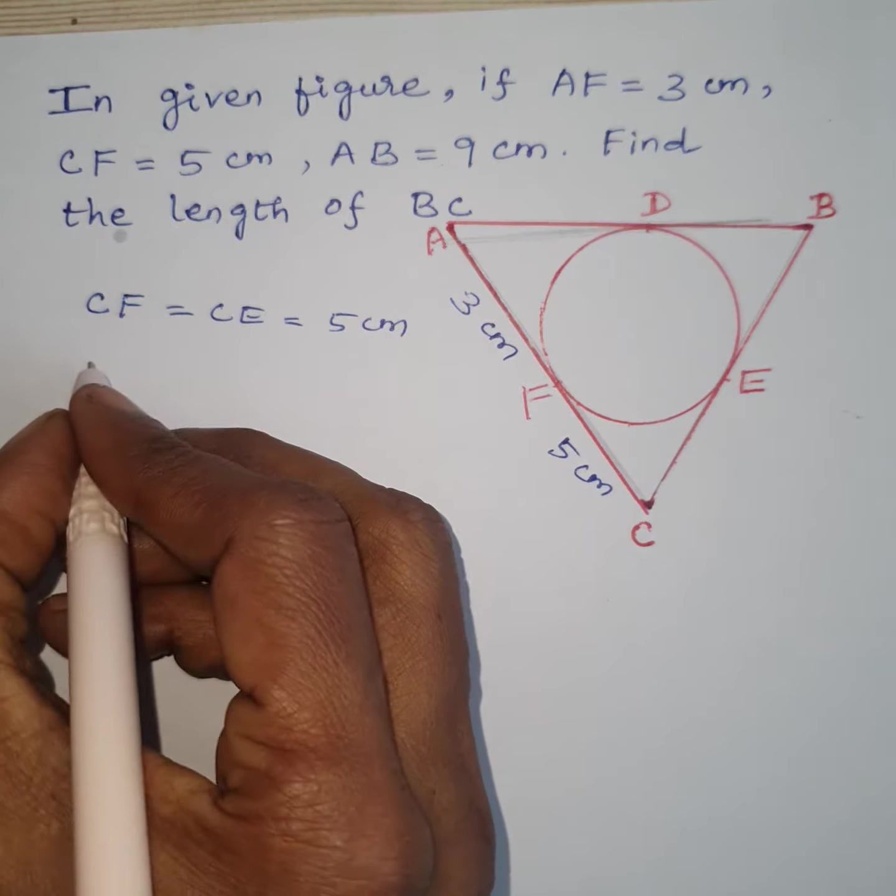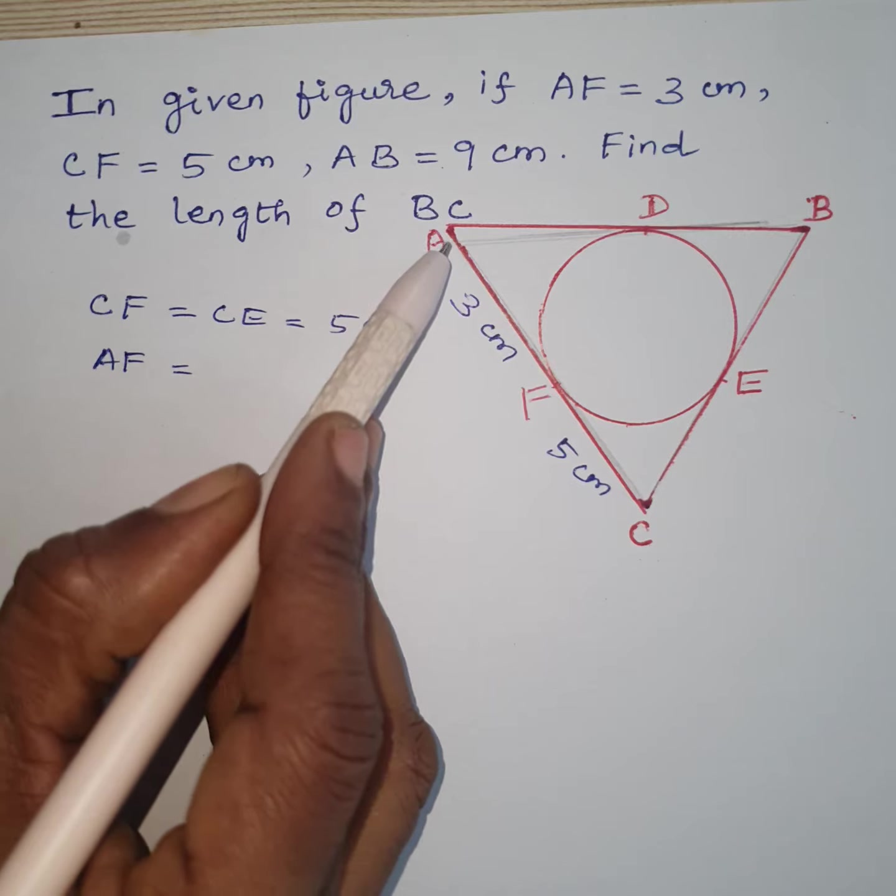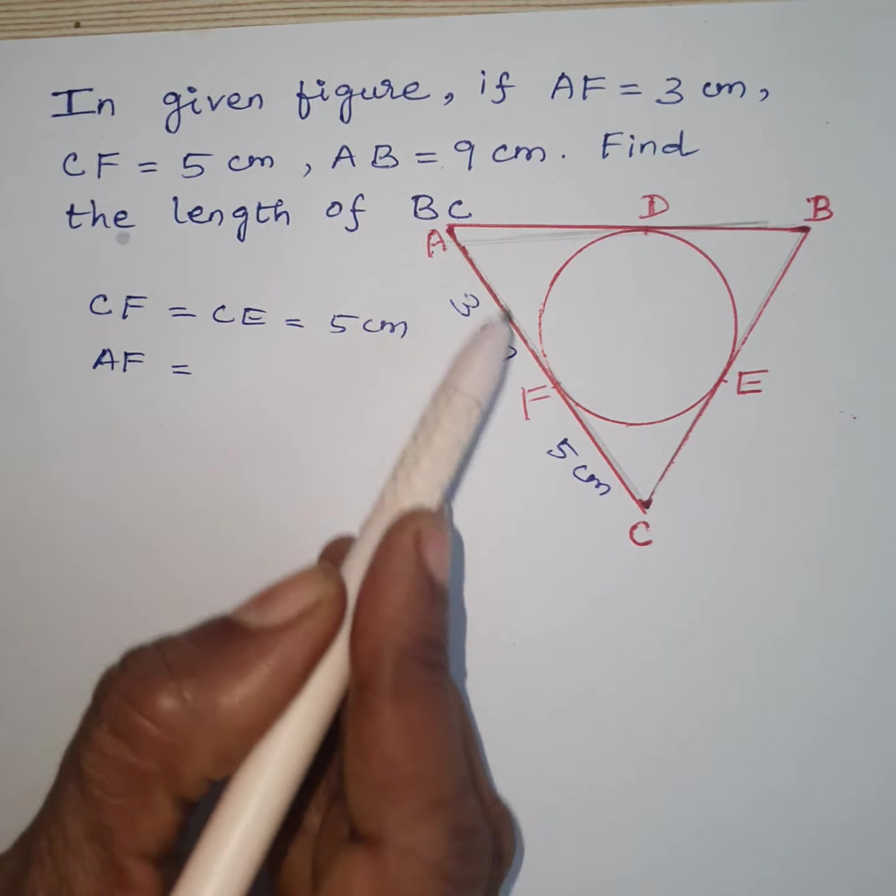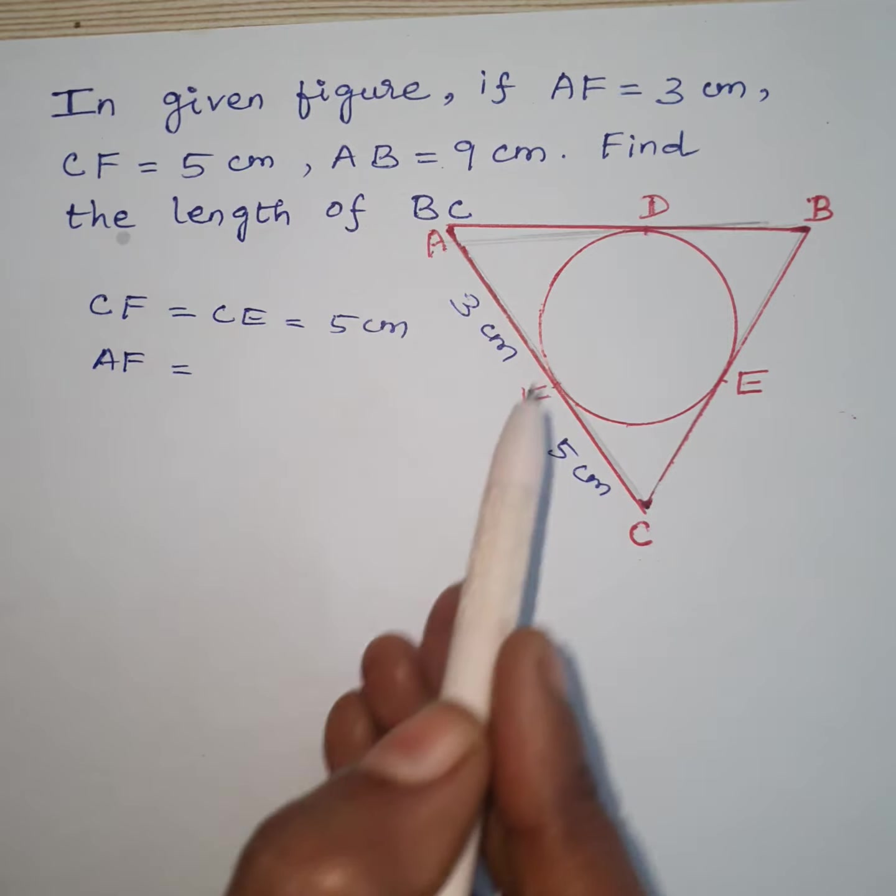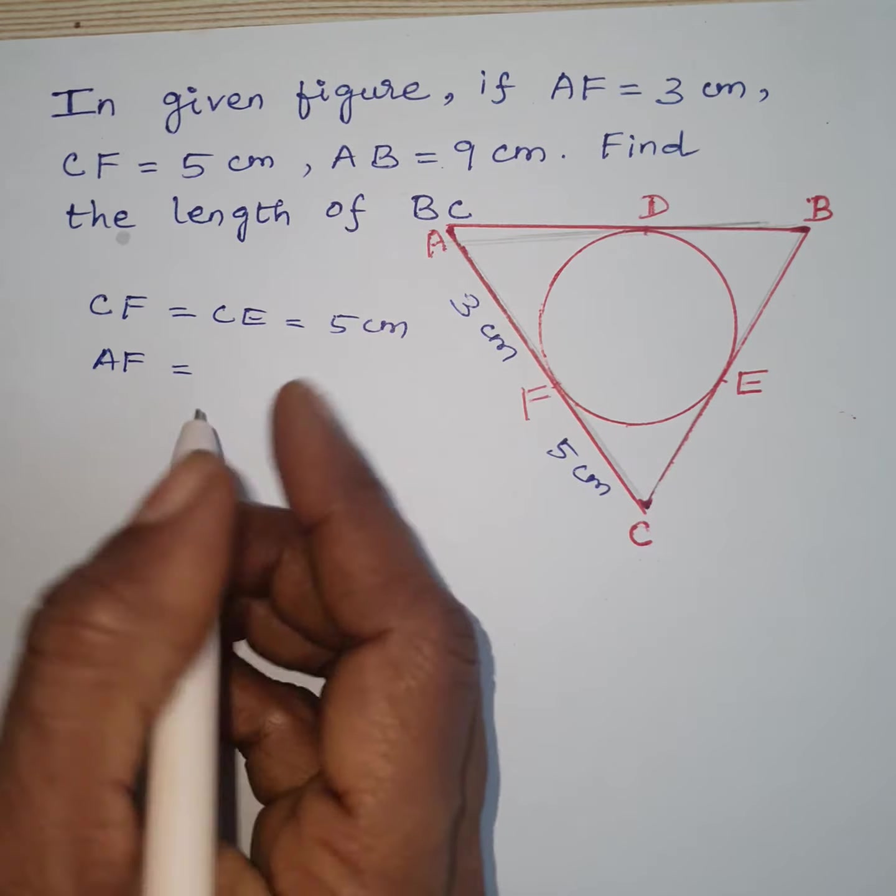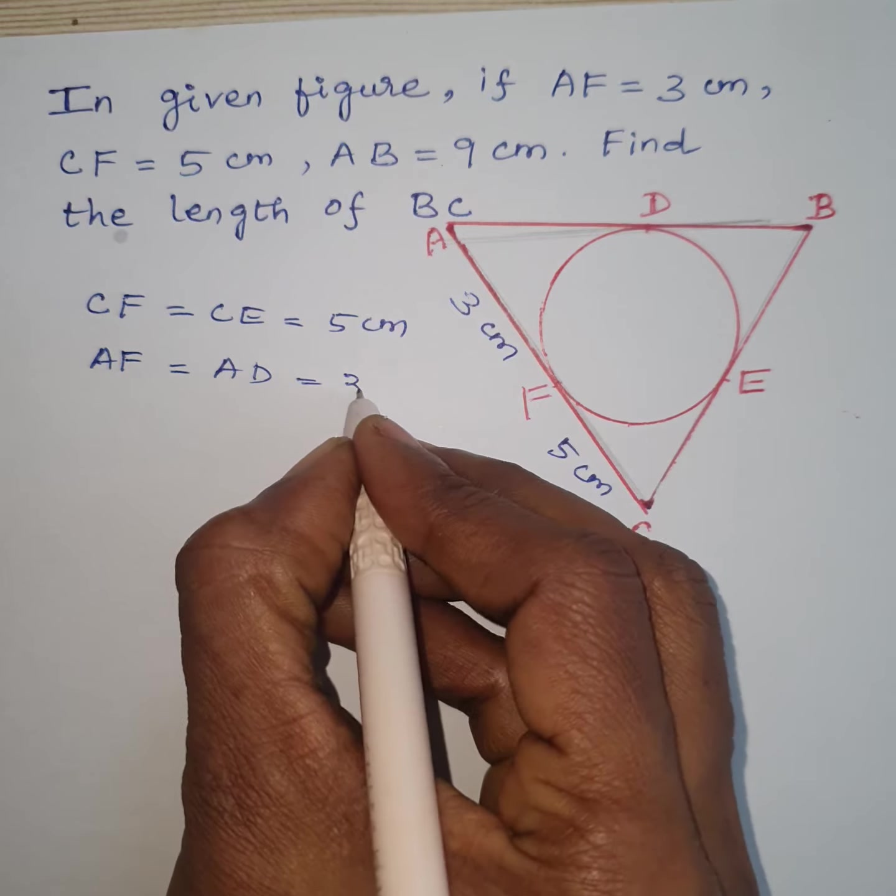And given AF is equal to 3 cm. Considering A as the external point, AD and AF are the tangents drawn from the external point A to the circle, so they are equal. AF equals AD which is equal to 3 cm.